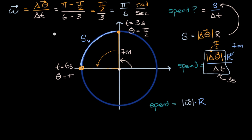And now, so this is super useful. Our speed, in this case, is going to be pi over six radians per second times the radius, times seven meters. And so what do we get? We are going to get seven pi over six meters per second, which will be our units for speed here.